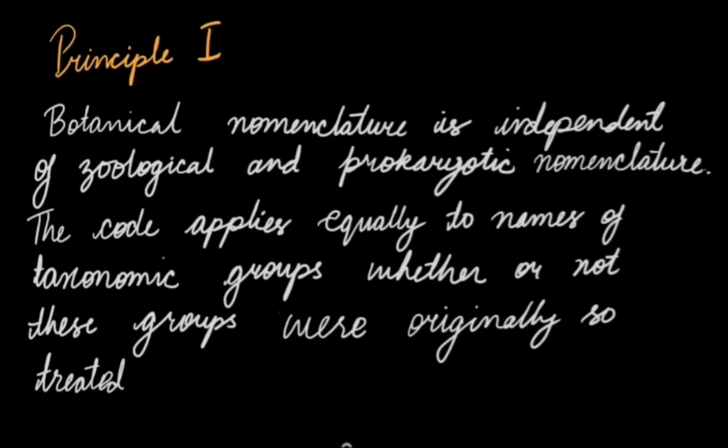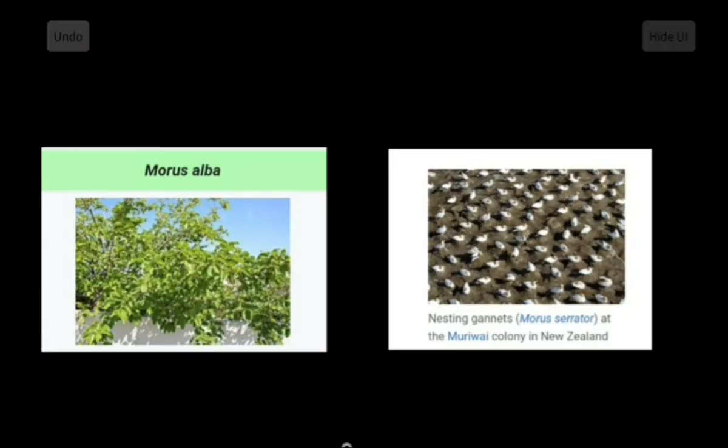Principle I is also called the straightforward principle because it straightforwardly states that botanical nomenclature has nothing to do with zoological or prokaryotic nomenclature. If an organism is identified as a plant, then it falls under botanical nomenclature, under ICN. But if it is identified as an animal or bacteria or any other organism, then botanical nomenclature has nothing to do with those organisms.